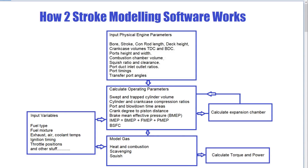An important one is the port and blowdown time areas. The time area is a calculation of how much time a particular port or aperture is open and what its size is. As an analogy: if you fill a container from a large tap you only need to open it briefly, but to fill the same volume from a small tap you'd have to leave it open much longer. Essentially, that's what this tells us — how much volume of gas can flow through the port given its size and how long it's open.